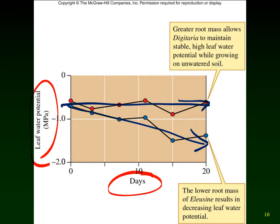The greater root mass and deeper roots maintained a higher leaf water potential for Digitaria. Park concluded that Digitaria succeeds in the drier dune habitat because it grows longer roots that exploit deeper moisture, keeping its water potential high. Eleucine suffers lower water potential and can't survive as well in the dunes — which is why you don't find it growing there. This study is interesting because it looked at both root growth and leaf water potential.